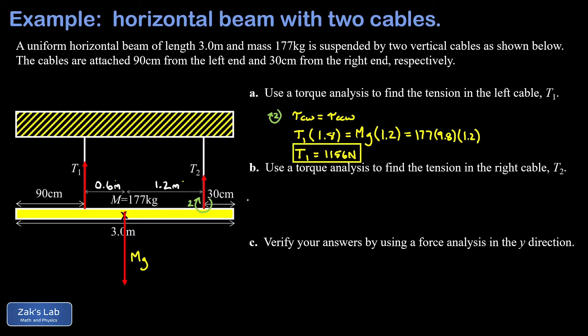In part b, we're asked to do the same thing to find T2, so we use a torque analysis. For this analysis, our rotation axis should be the attachment point of T1. The point of that is that T1 will not appear in the torque analysis because the lever arm is zero with respect to that rotation axis. Again, the clockwise torques better balance the counterclockwise torques for this object to stay in equilibrium.